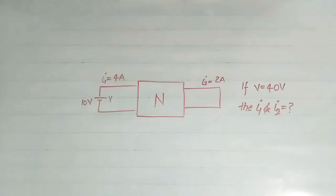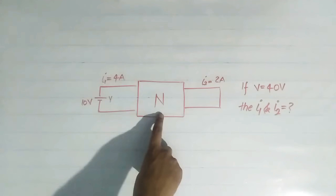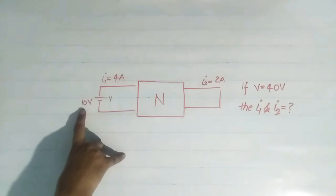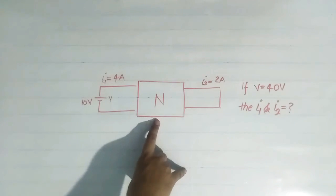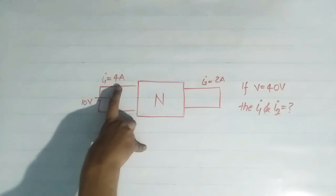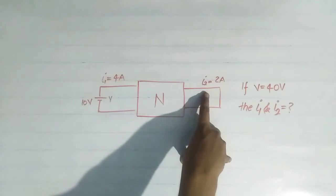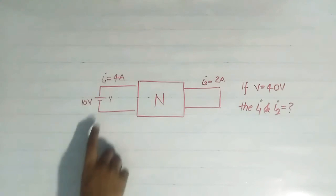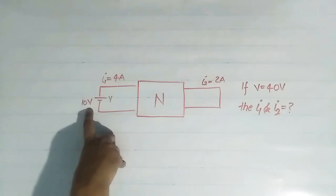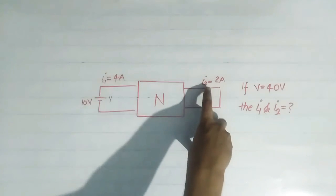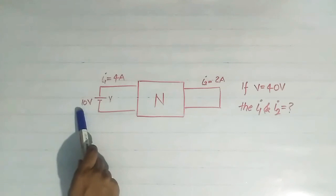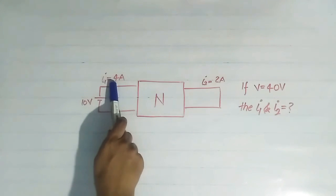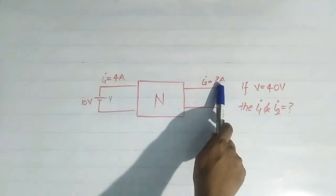Now see this question. This network is linear and a voltage source of 10 volt is applied. The current at the input side is 4 ampere and the current at the output side is 2 ampere. The question says: if this voltage v becomes 40 volt, what is the value of i1 and i2? Initially when voltage is 10 volt, i1 is 4 ampere and i2 is 2 ampere.